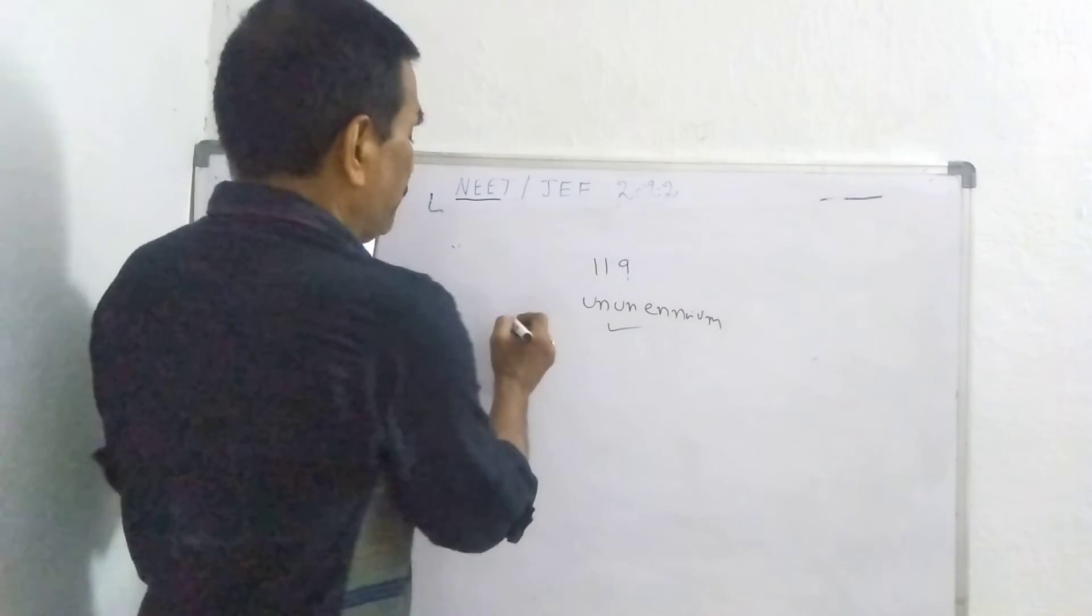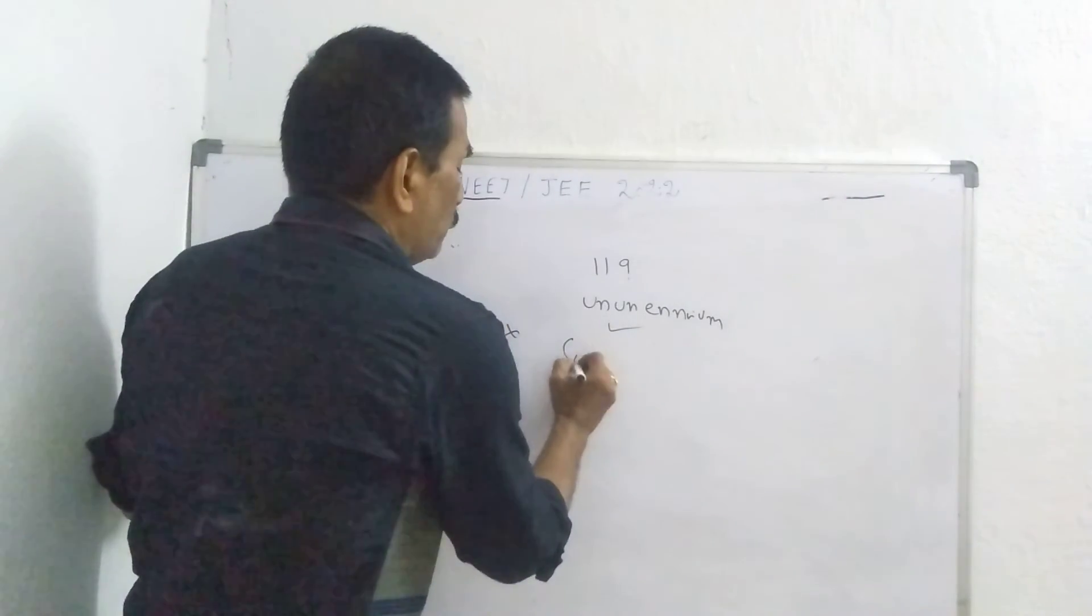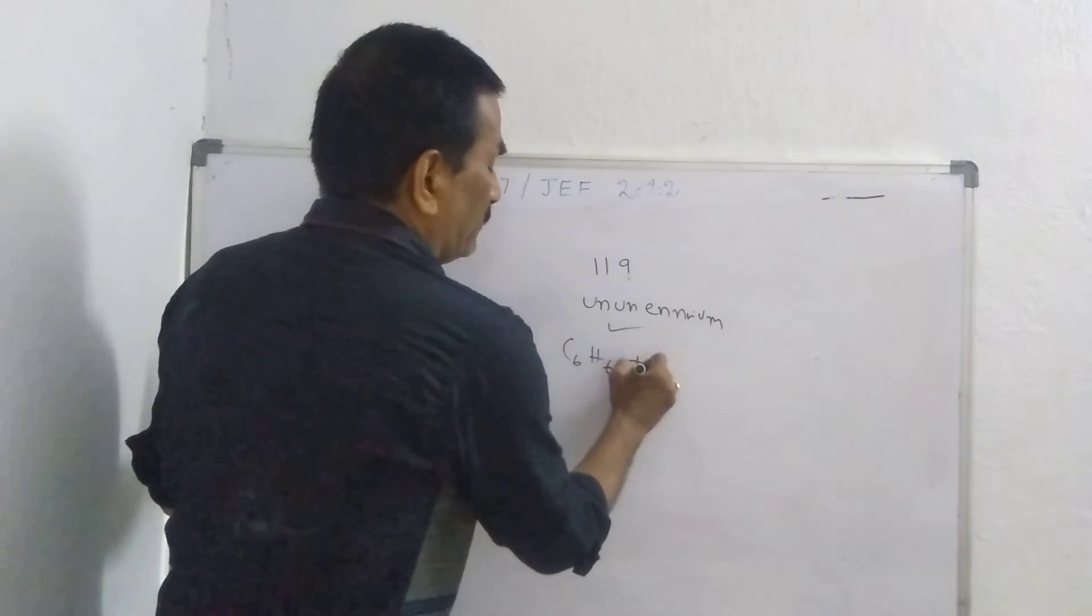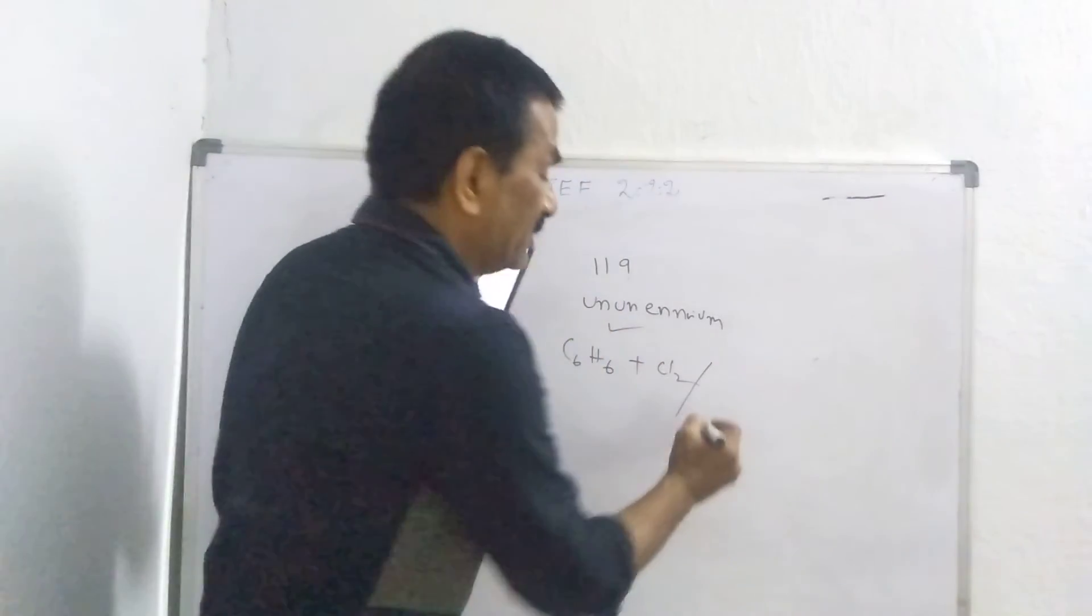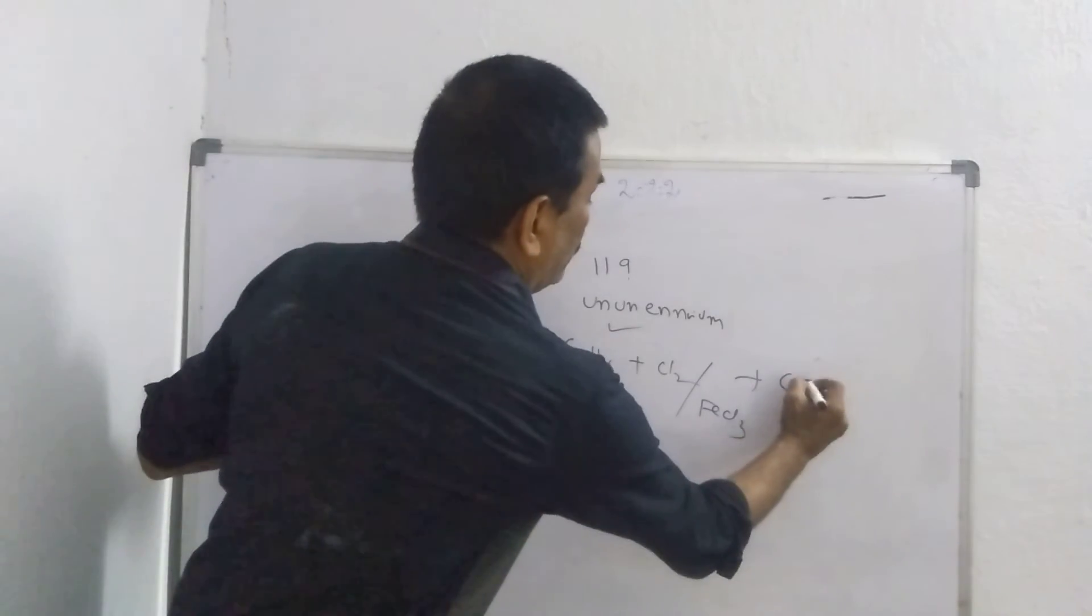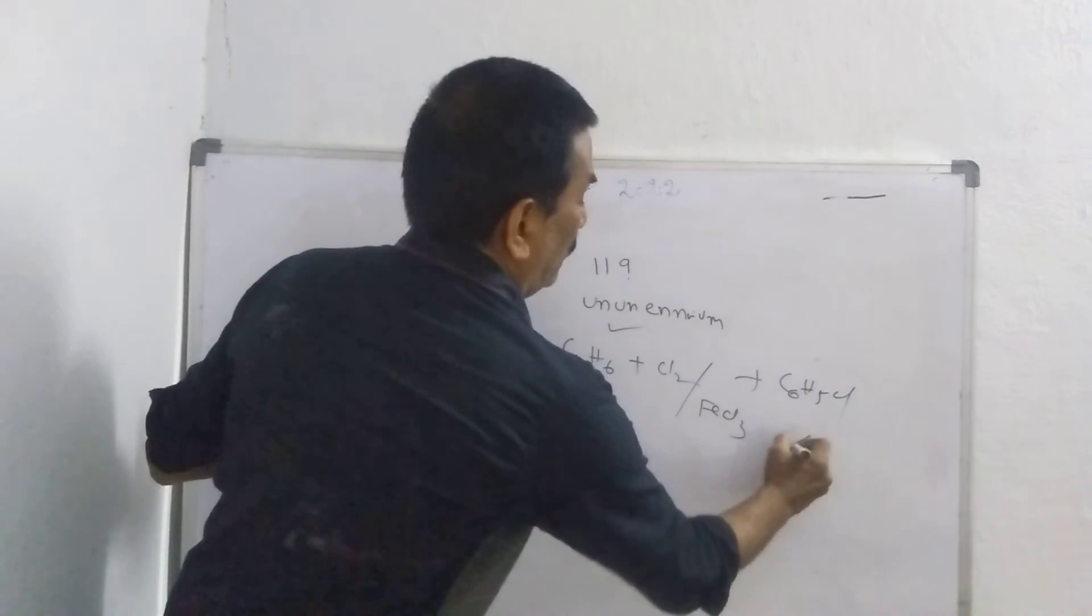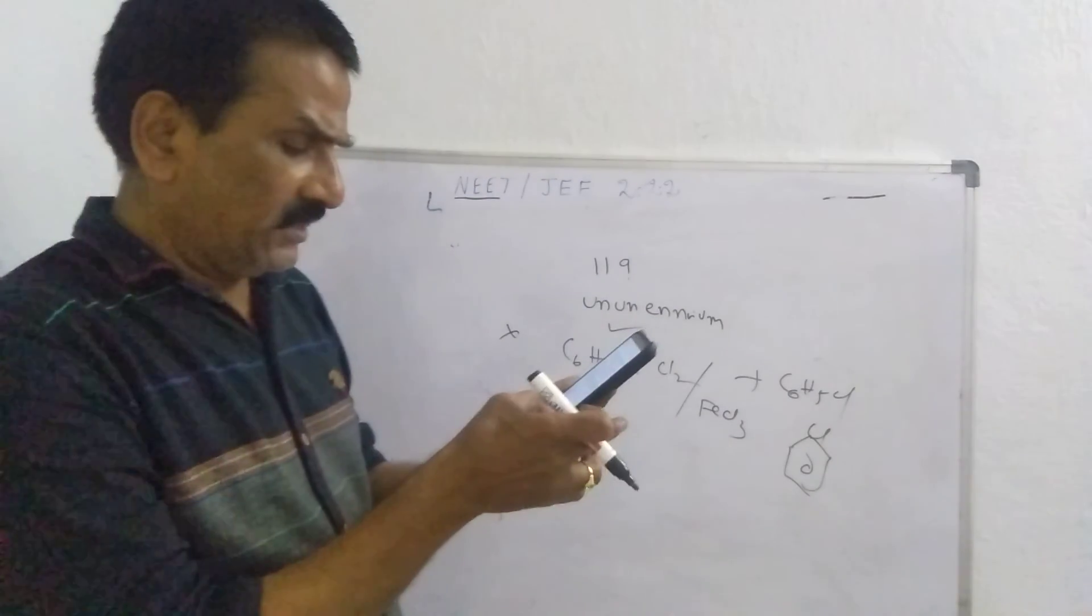At the same time, how you prepare chlorobenzene. Chlorobenzene, we have to prepare benzene, at the same time chlorine, either anhydrous AlCl3 or FeCl3. We have chlorobenzene, C6H5Cl or benzene contains chlorobenzene. So that is a simple question.